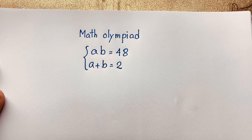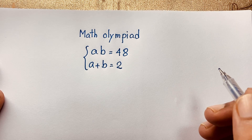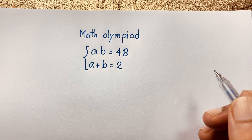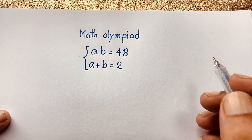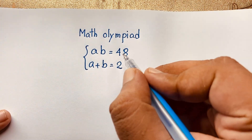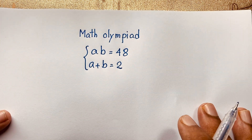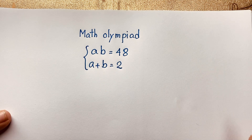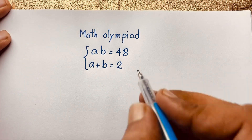Hello everyone, welcome to Russell's Classroom. Today we are solving an interesting math Olympiad question. The question is: v is equal to 48, a plus v is equal to 2 — find av. How do I solve this interesting math Olympiad question?